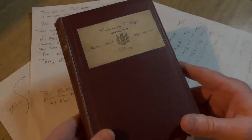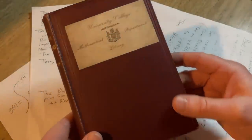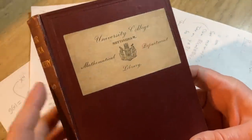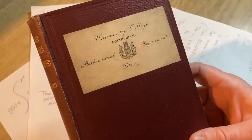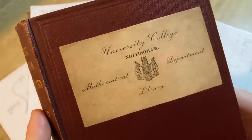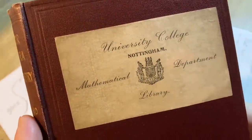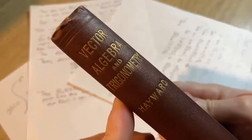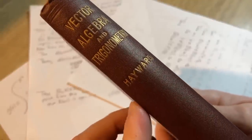So I am really curious about something and that's why I'm making this video. I want you to look at this book, let's just look at it and keep an open mind. University College Nottingham Mathematical Department Library, and it says Vector Algebra and Trigonometry by Hayward.